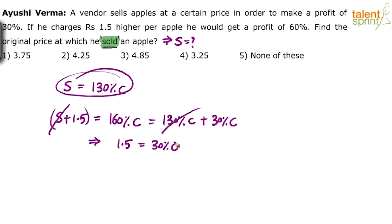I know all of you have done the same thing. And by the way, all that we have done here so far has to be done mentally. You cannot afford to put pen on paper for this one. You should be doing this step mentally: that 1.5 is 30% of the cost price.